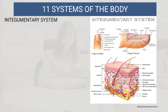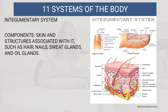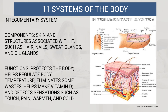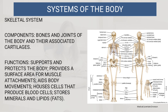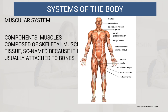There are 11 systems of the body. The integumentary system includes the skin and associated structures such as hair, nails, sweat glands, and oil glands; it protects the body, helps regulate body temperature, eliminates some wastes, helps maintain vitamin D, and detects sensations such as touch, pain, and warmth. The skeletal system consists of bones, joints, and associated cartilages; it supports and protects the body, provides surface area for muscle attachments, aids movements, houses blood cell-producing cells, and stores minerals. The muscular system is composed of skeletal muscle tissue, usually attached to bones.